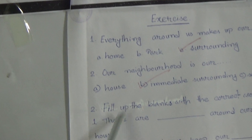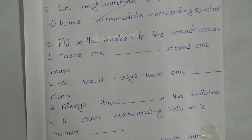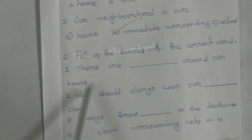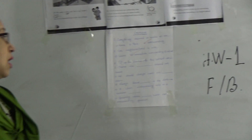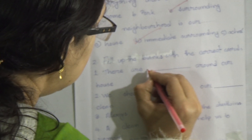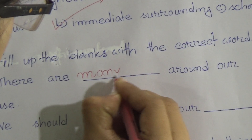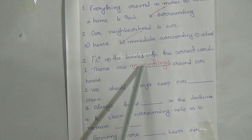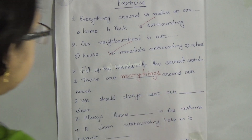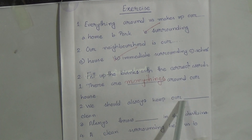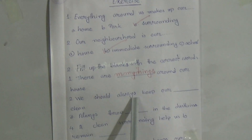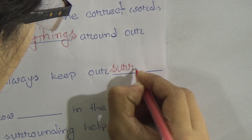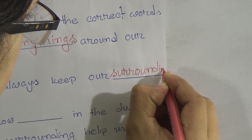Exercise two: fill in the blanks with the correct words. Number one — 'There are dash around our houses.' The answer is 'many things' — M-A-N-Y, many; T-H-I-N-G-S, things. There are many things around our houses. Number two — 'We should always keep our dash clean.' The answer is 'surrounding' — we should always keep our surrounding clean.